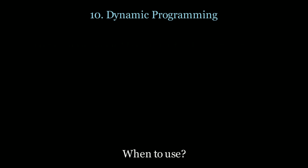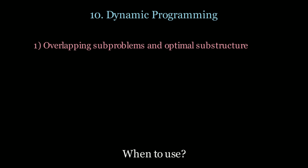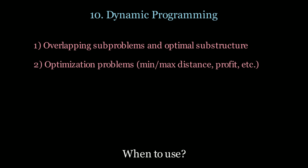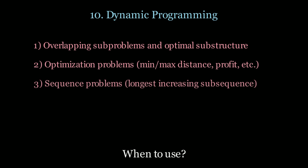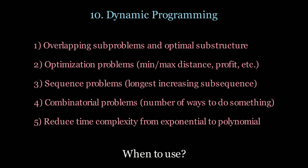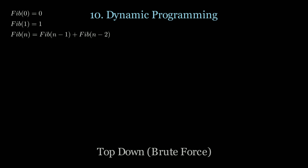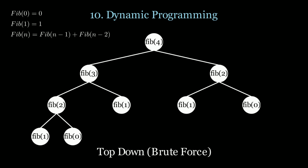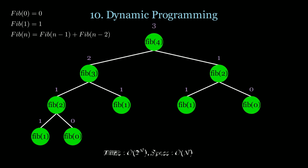Next up is dynamic programming. Use DP when you have overlapping sub-problems, optimization problems such as finding minimum or maximum distance and profit, sequence problems, combinatorial problems such as finding the number of ways to do something, and when you want to reduce time complexity from exponential to polynomial. For the Fibonacci sequence, a naive top-down approach solves Fibonacci of four recursively but recomputes Fibonacci of one and two twice — time complexity O(2^N), space O(N). Can we do better? Yes.